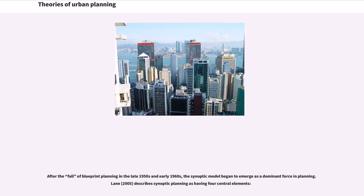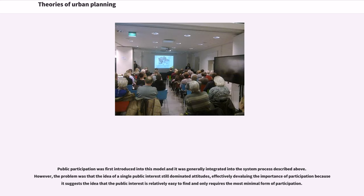After the fall of blueprint planning in the late 1950s and early 1960s, the synoptic model began to emerge as a dominant force in planning. Lane described synoptic planning as having four central elements. Public participation was first introduced into this model, though the problem was that the idea of a single public interest still dominated attitudes, effectively devaluing the importance of participation because it suggested the public interest was relatively easy to find and required only minimal participation.